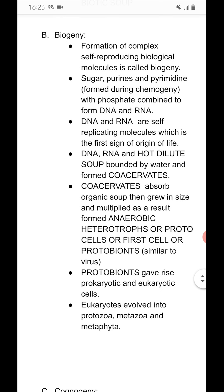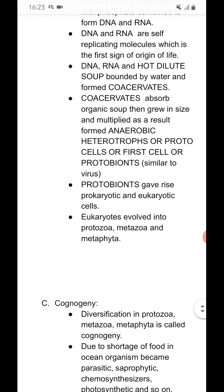Biogeny: formation of complex self-reproducing biological molecules is called biogeny. Sugar, purine, and pyrimidine formed during chemogeny react with phosphate and formed DNA and RNA. DNA and RNA are self-replicating molecules, which is the first sign of origin of life. DNA, RNA and hot dilute soup bonded with water and formed coacervates. Coacervates absorbed organic soup, then grew in size and multiplied, and as a result formed anaerobic heterotrophs, or protocell, or first cell, or protobiont, which is similar to a virus.